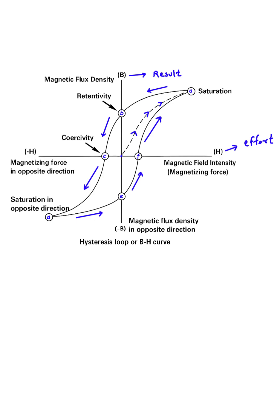Let's start by understanding the axes. The horizontal axis, labeled H, represents the magnetic field intensity. A simple way to think of this is the effort we put in to magnetize the material. The vertical axis, labeled B, represents the magnetic flux density. This is the result, how magnetic the material actually becomes.